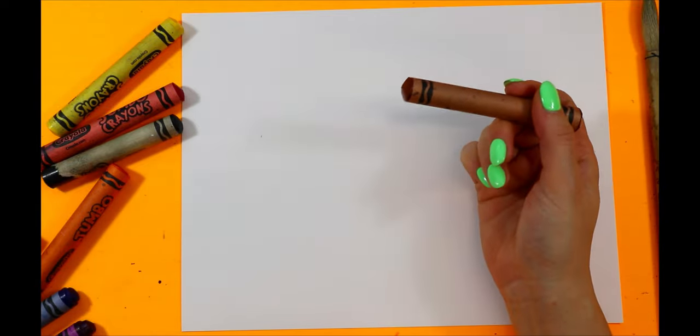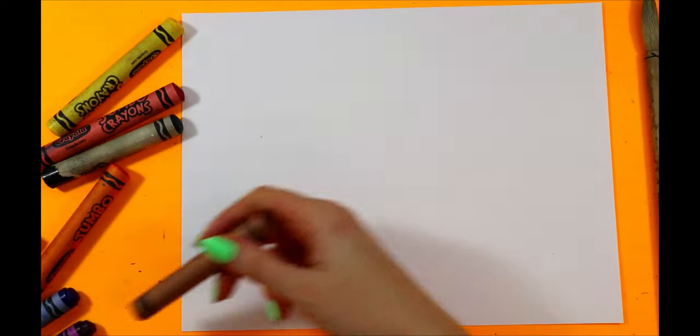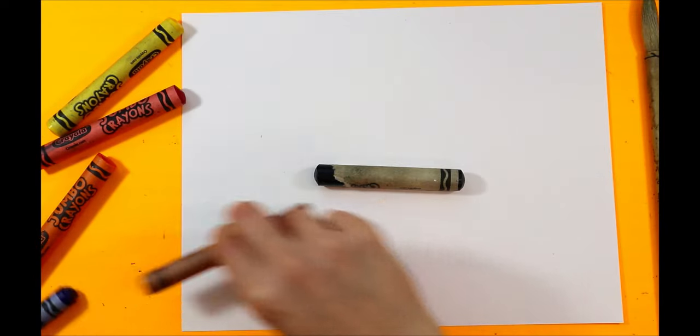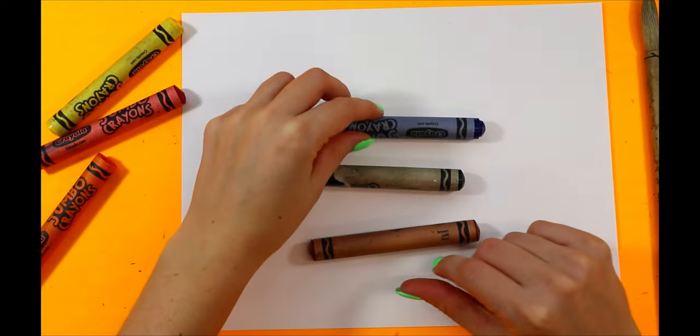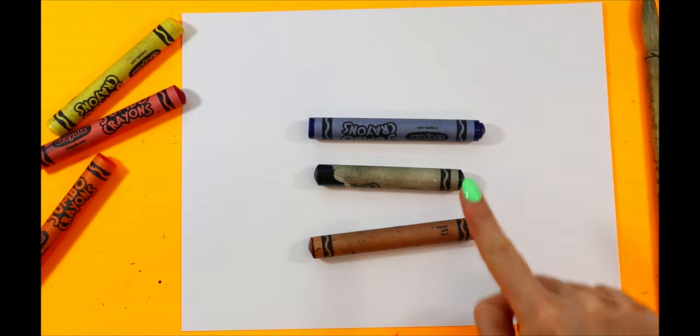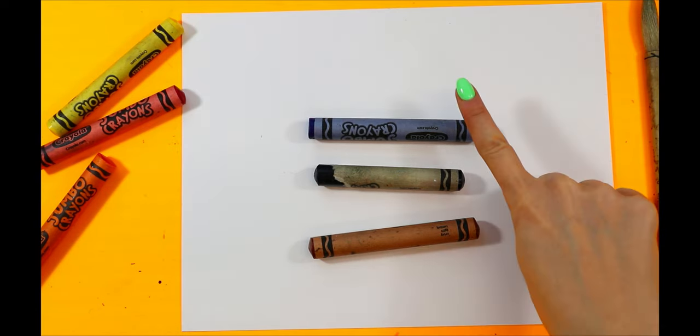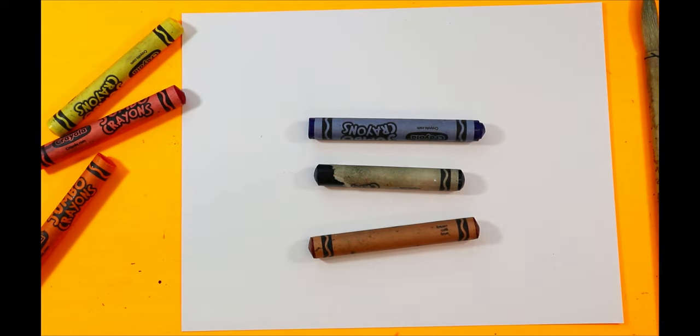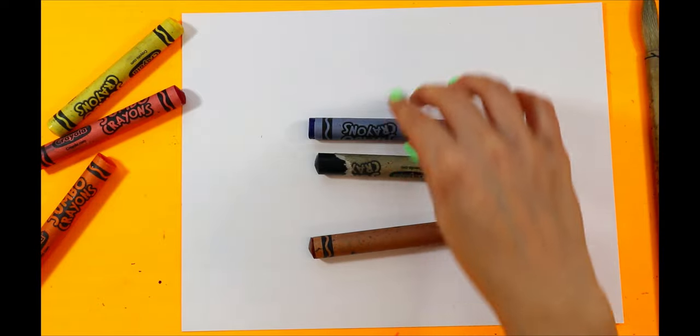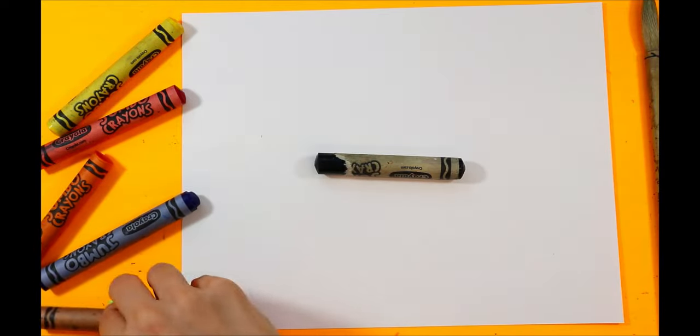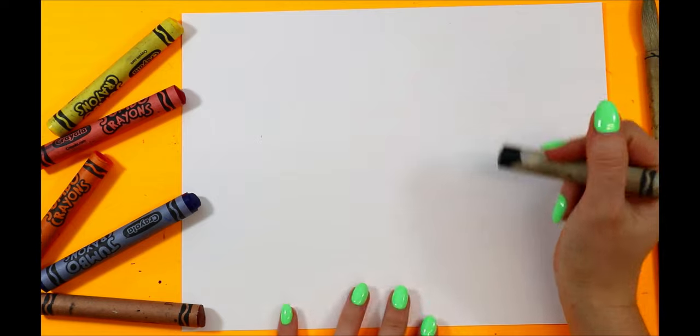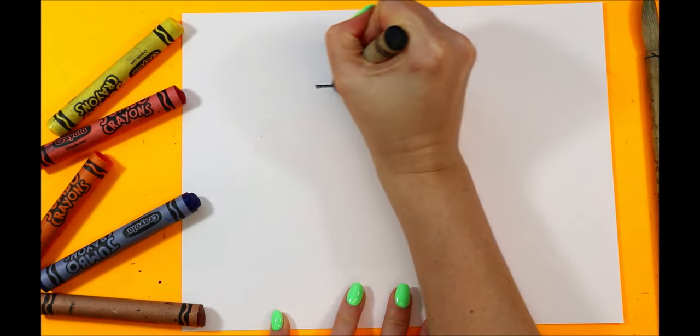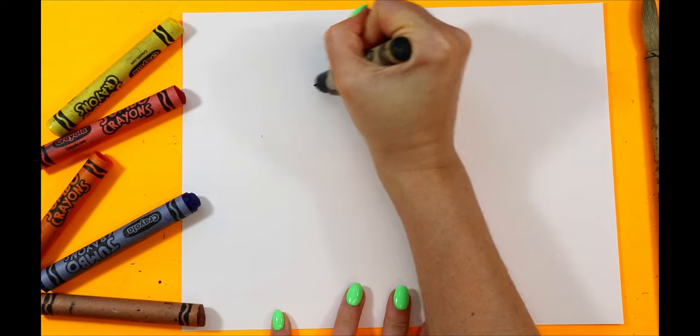So we're going to grab our wax crayons. You can draw with either a blue, a black, or a brown. A blue, a black, or a brown crayon. I'm going to draw with my black. Let's begin with a straight line at the top.